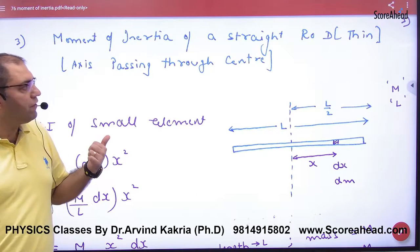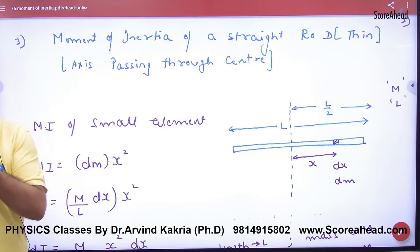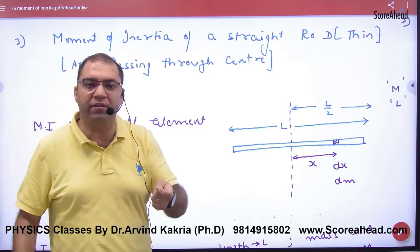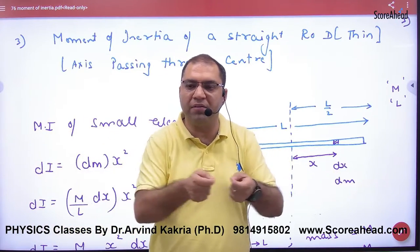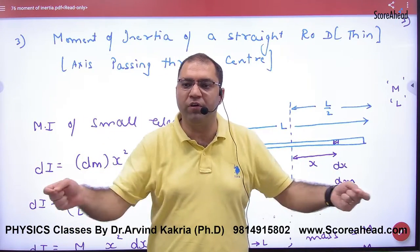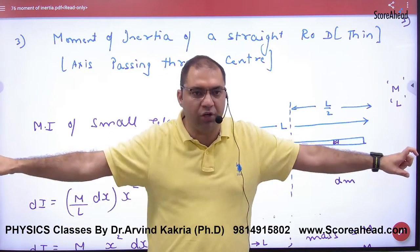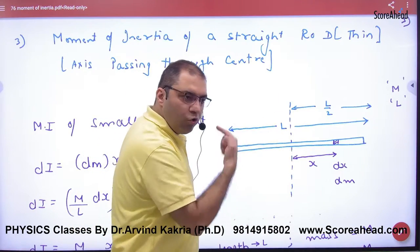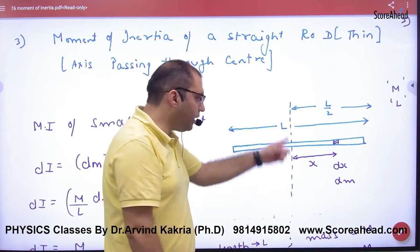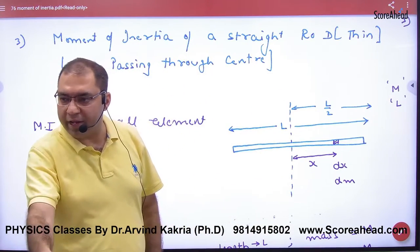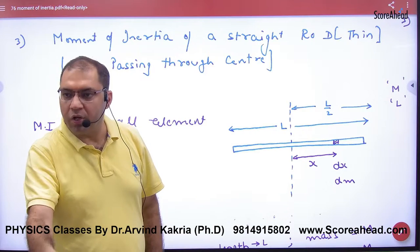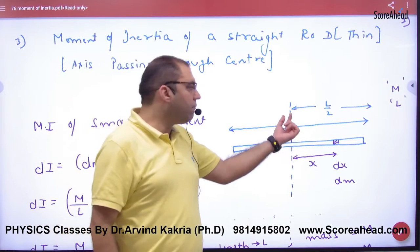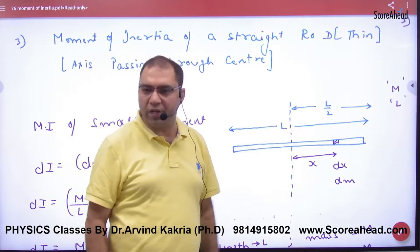Moment of inertia of a straight rod — a thin rod. Thin rod means the thickness is negligible compared to its length, so mass is distributed over the length of the rod. The rod is spinning and the axis is passing from the center of the rod. So if the axis is passing from the center, we need to find the moment of inertia.